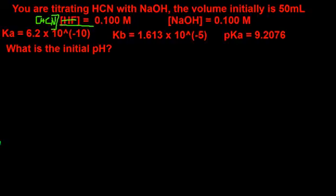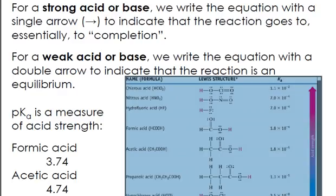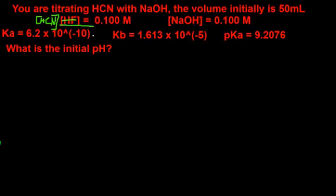I hope I have these pKa values right — yes. So we know the Ka is 6.2 times 10 to the negative 10, that's given. The Kb is 1.613 times 10 to the negative 5, that's given. And the pKa is 9.2076, which is also given.